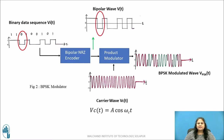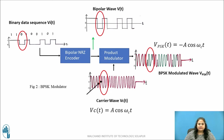When the input bit is 0, the output of the bipolar NRZ encoder is a negative constant voltage, say −1 volt, which is then multiplied by the carrier during the bit slot in the product modulator. The output PSK signal is given by V_PSK(t) = −A cos(ωc·t). Thus, the carrier signal and the BPSK signal are completely out of phase with a phase shift of 180 degrees in the BPSK signal with respect to the carrier. In the BPSK signal, the phase of the carrier changes with respect to the 1 and 0 bits of the input data.